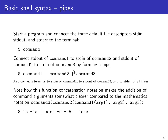It's also possible to pipe commands together by starting several commands on the same line separated by the vertical bar symbol, also known as the pipe symbol. This connects the standard output of command 1 to the standard input of command 2, and standard output of command 2 to standard input of command 3. Standard input of command 1 is connected to the keyboard, and standard output of command 3 is connected to the screen of the terminal.